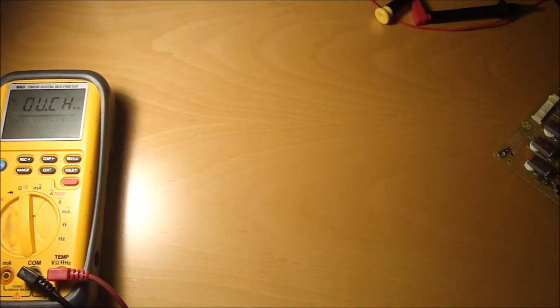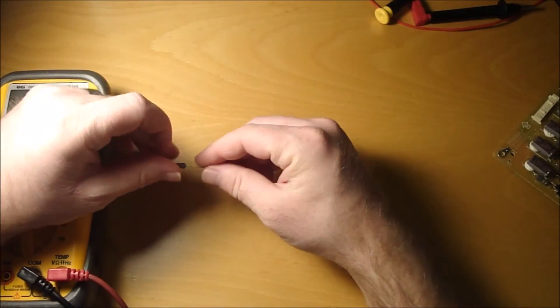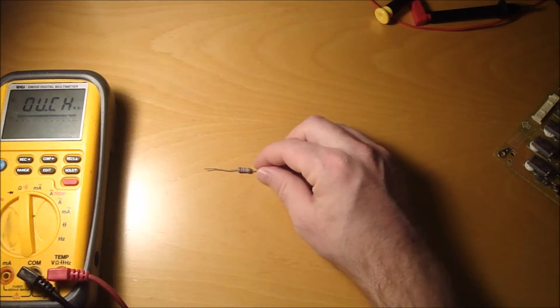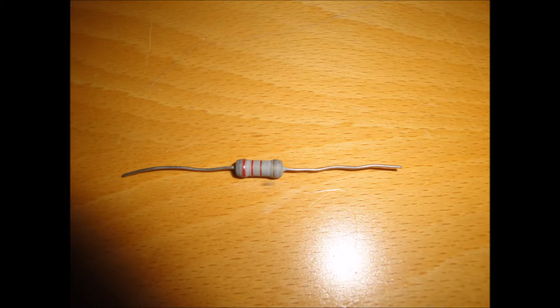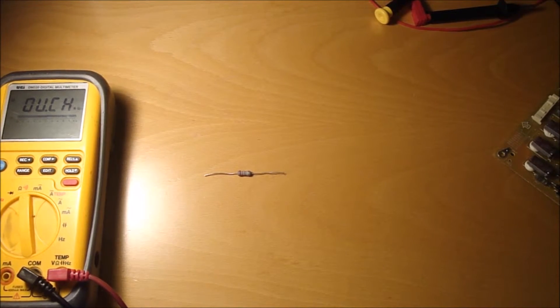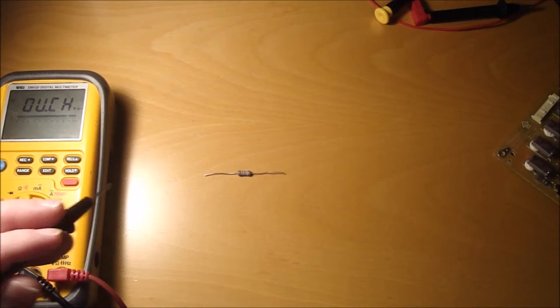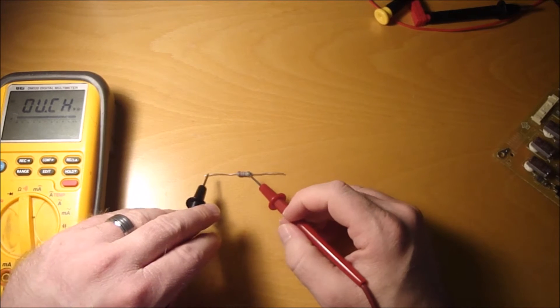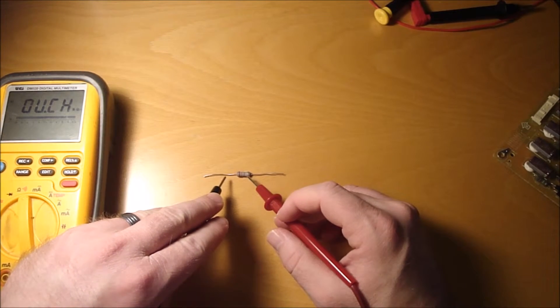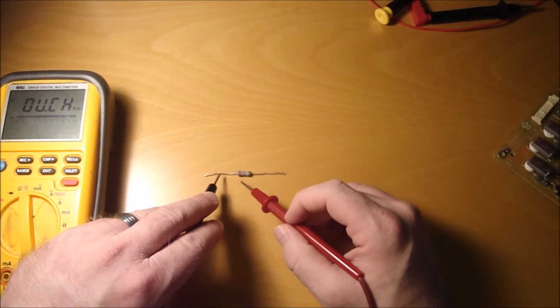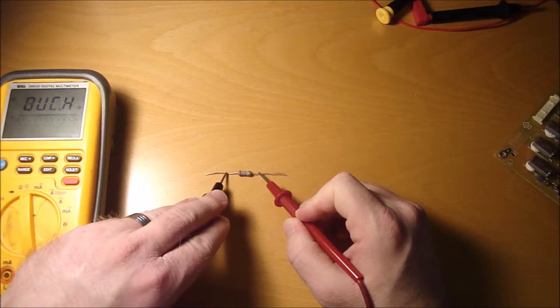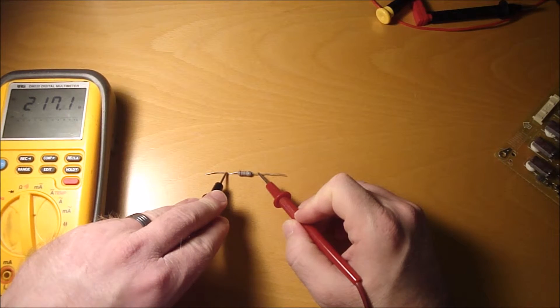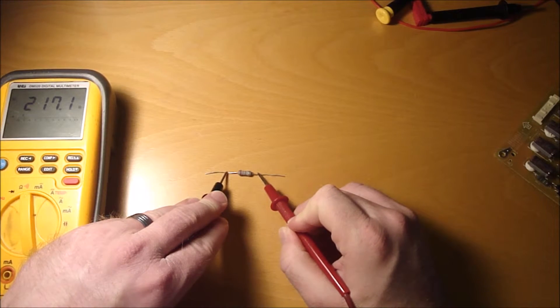Alright, so we're going to just read a couple of resistors here just to prove it. So this is red, red, brown, gold. So red, red on a four band is the two number bands. Red is two. So I got two, two. Brown is times 10. So it'd be 220 ohms. That says 217, so that's fairly close.